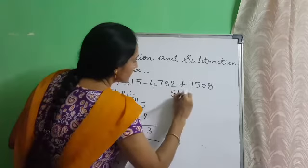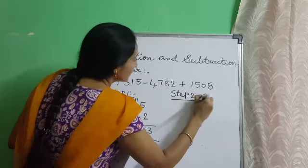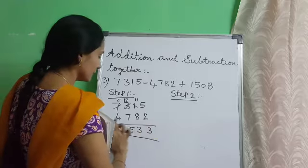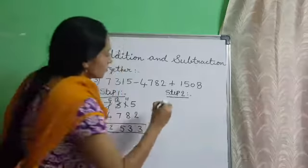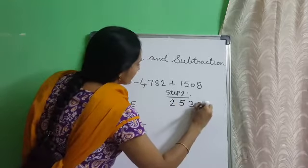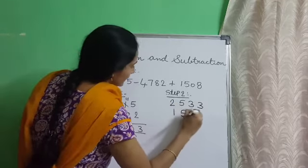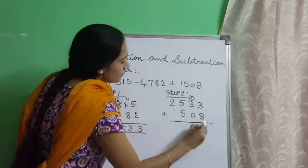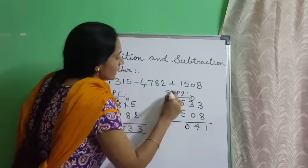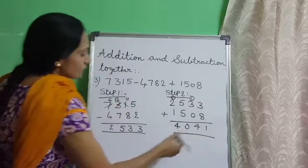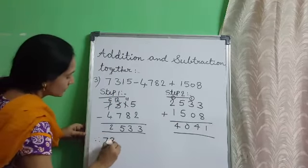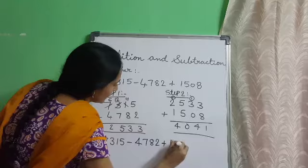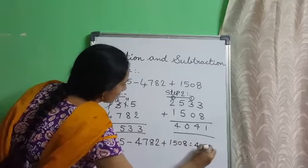Step 2: add the third number 1508 to the difference of the first two numbers, 2533. 3 plus 8 is 11, carry 1. 1 plus 3 is 4. 4 plus 0 is 4. 5 plus 5 is 10, carry 1. 1 plus 2 is 3, 3 plus 1 is 4. The answer is 4041. Therefore, 7315 minus 4782 plus 1508 is equal to 4041.